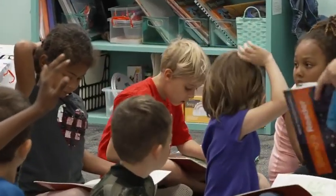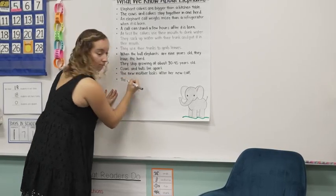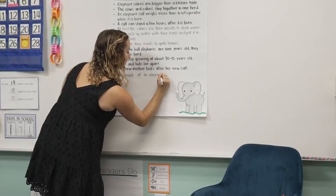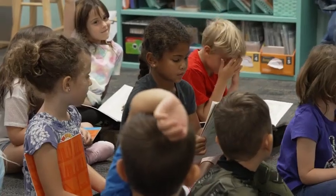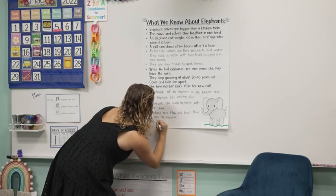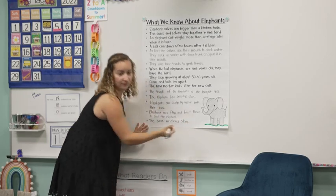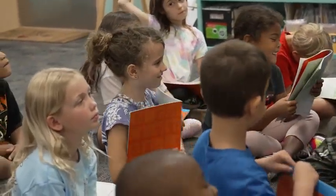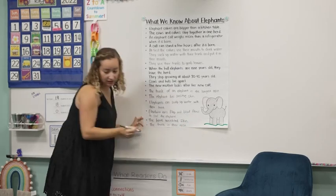Oliver shared: the trunk of an elephant is the longest nose ever. I saw some clam claps — nice job! Sophia shared: they have little skin. Alice shared: I learned that the trunk is actually the nose — I never even knew that.